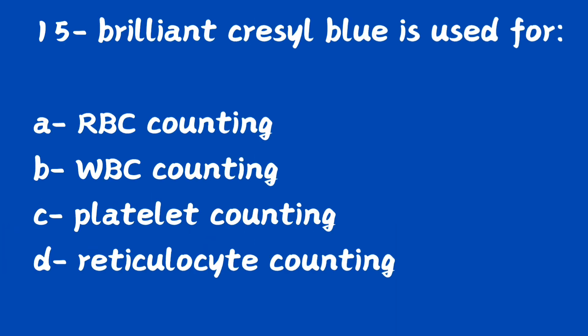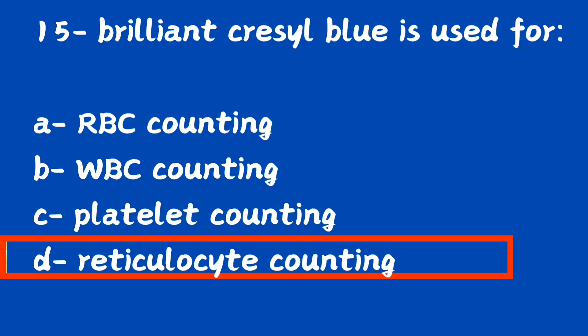Question number 15. Brilliant cresyl blue is used for: option A, RBC counting; option B, WBC counting; option C, platelet counting; option D, reticulocyte counting. Brilliant cresyl blue (BCB) is used for option D, reticulocyte counting. Brilliant cresyl blue is used for reticulocyte counting.